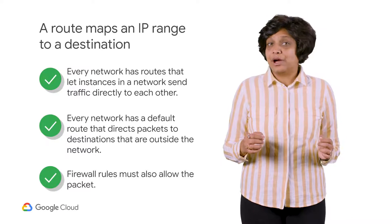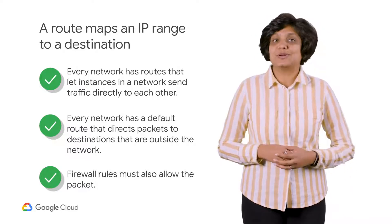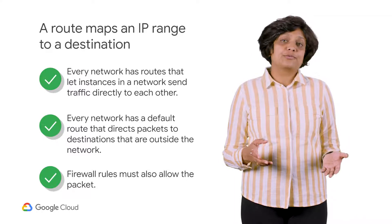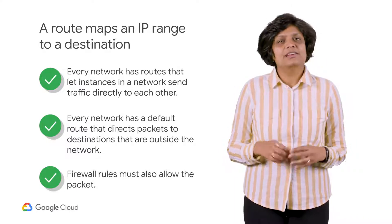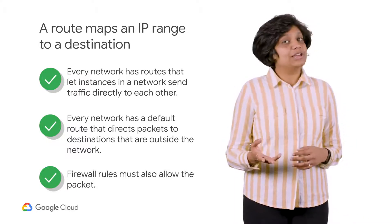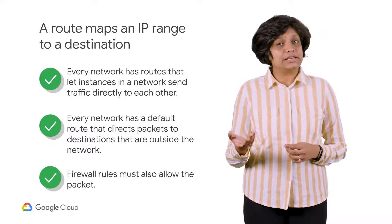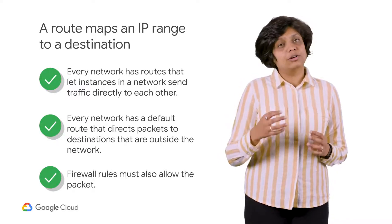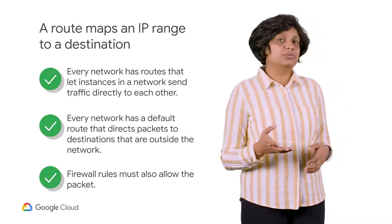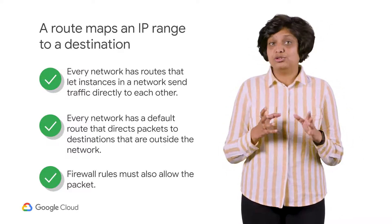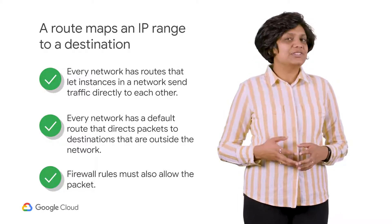Just creating a route doesn't ensure that packets will be received by the specified next hop. Firewall rules must also allow the packet. The default network has pre-configured firewall rules that allow all instances in the network to talk with each other. Manually created networks don't have such rules, so you must create them, as you will experience in the first lab.